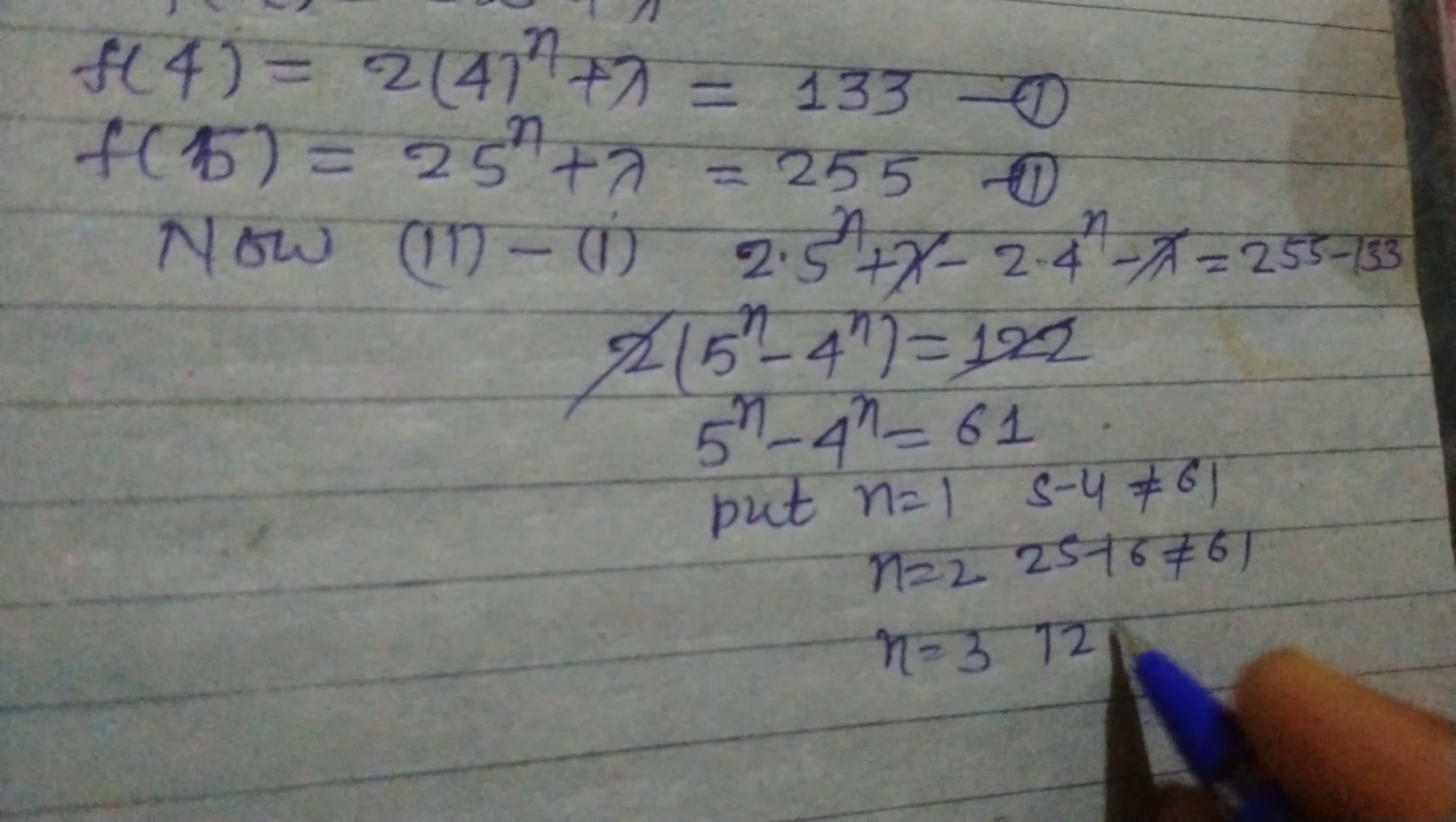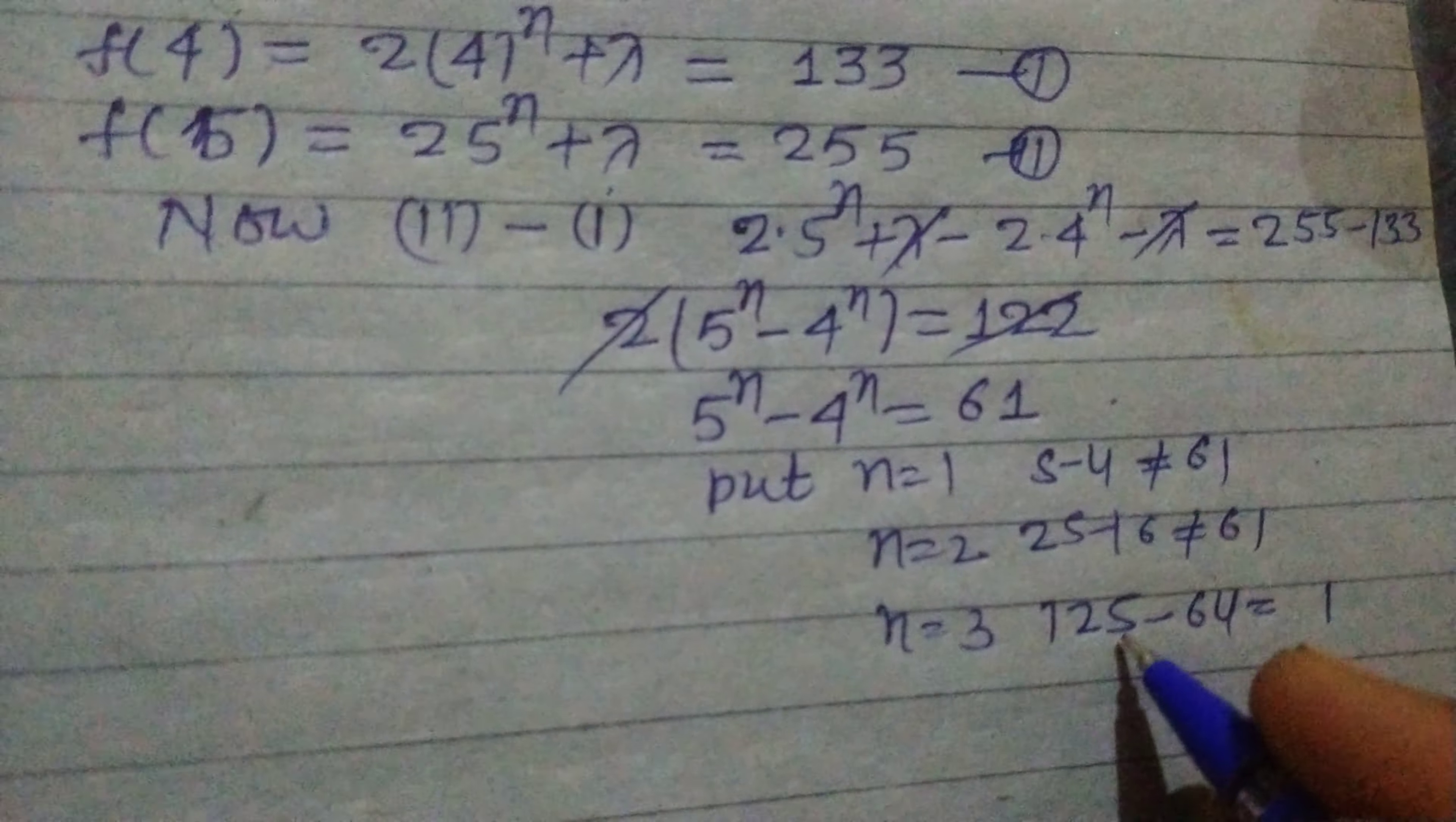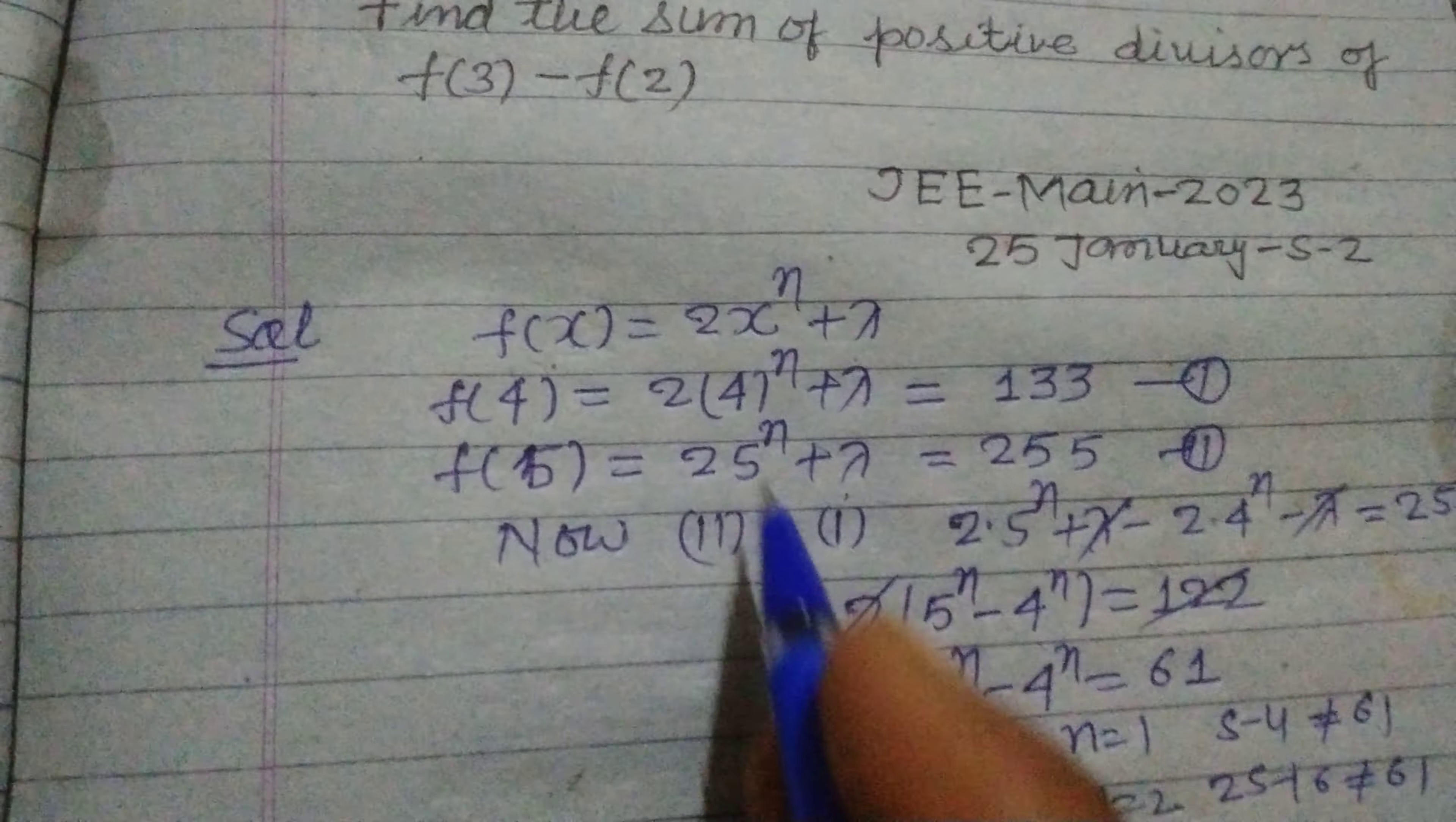So this is equal to 61. So n = 3 is the required number. And when we put n = 3 in this, we get lambda.